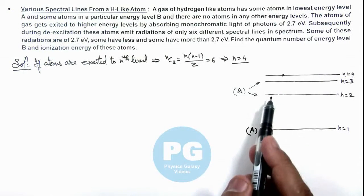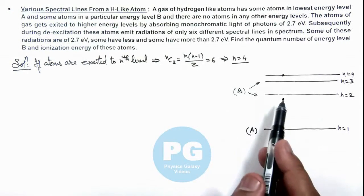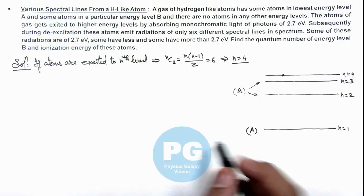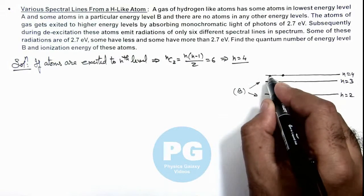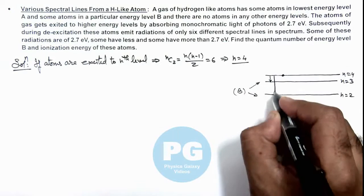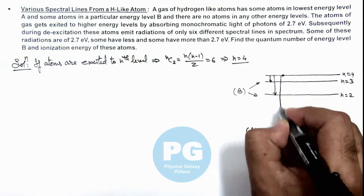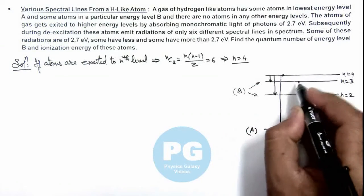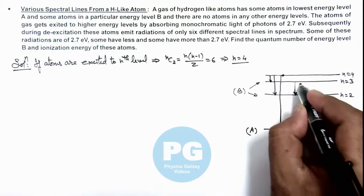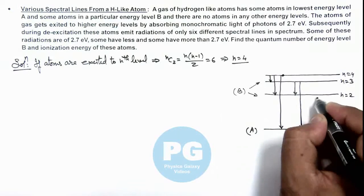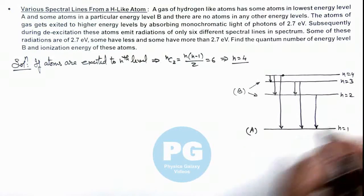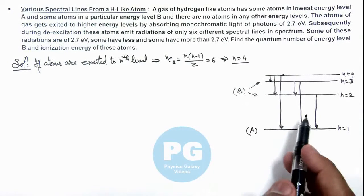Now in this situation when electron will de-excite from n equal to 4, the possible energies are corresponding to 4 to 3, 4 to 2, and 4 to 1, and then other will be 3 to 2, 3 to 1, and then it will be 2 to 1. So these are the 6 possible energies which could be emitted.